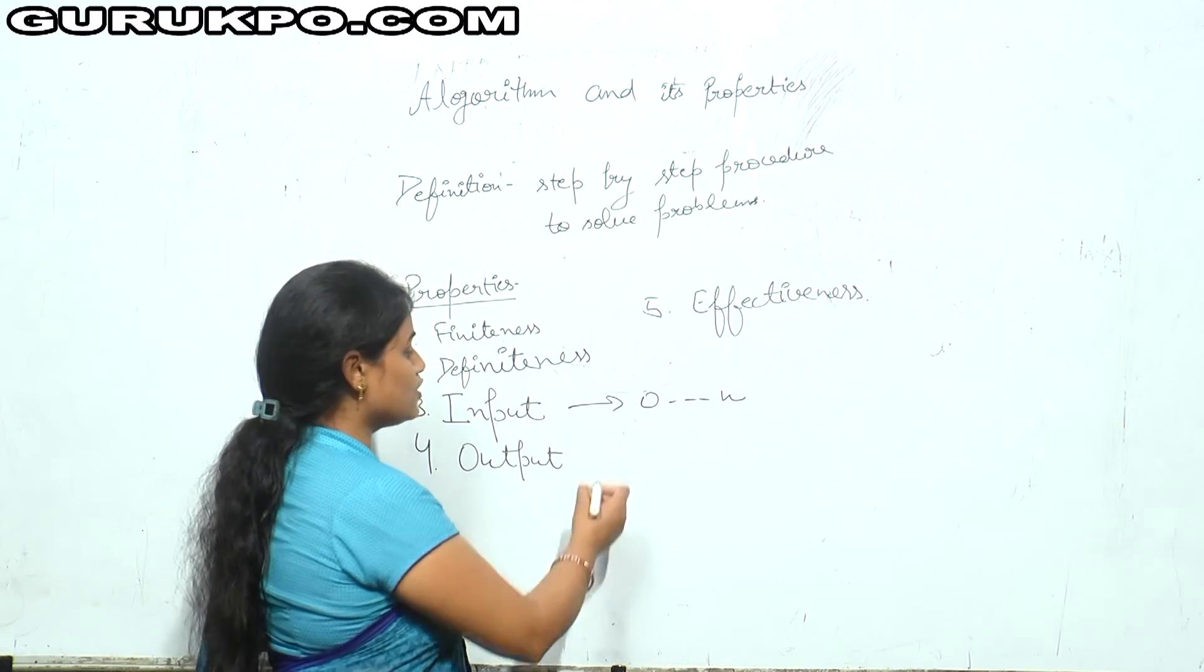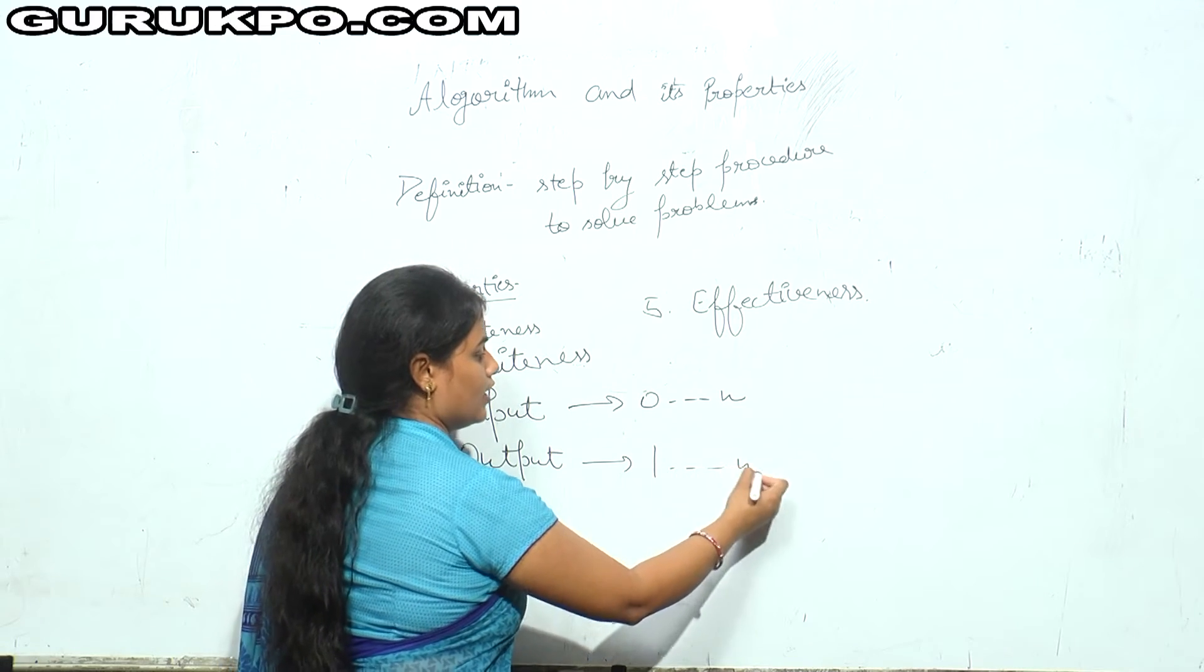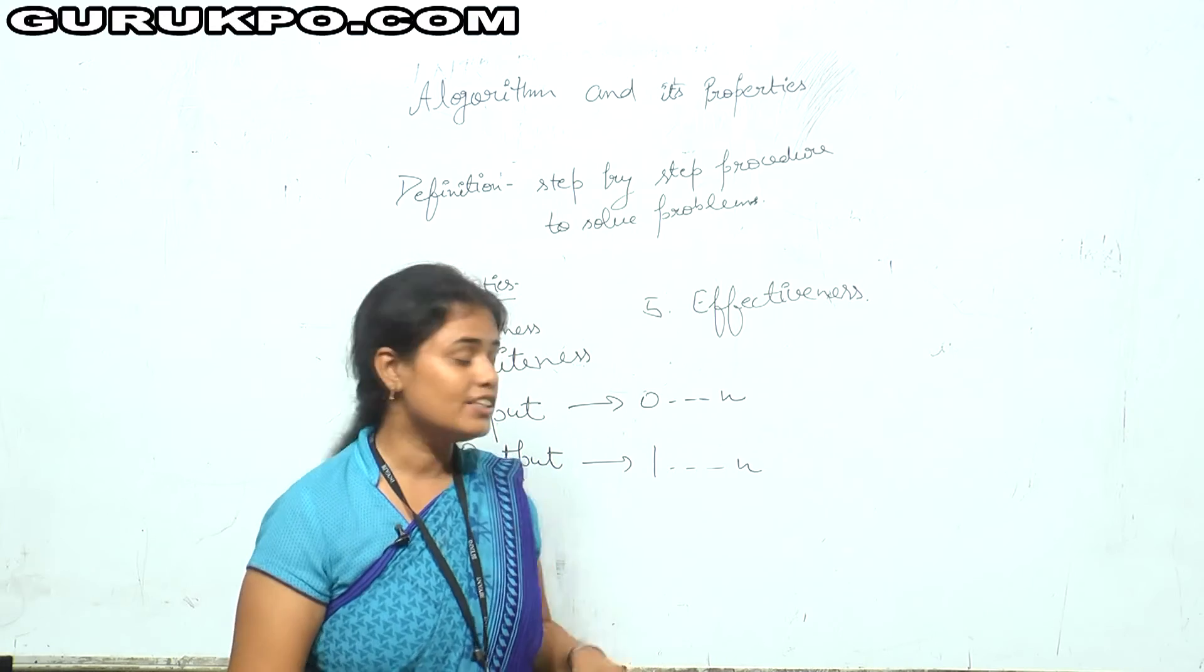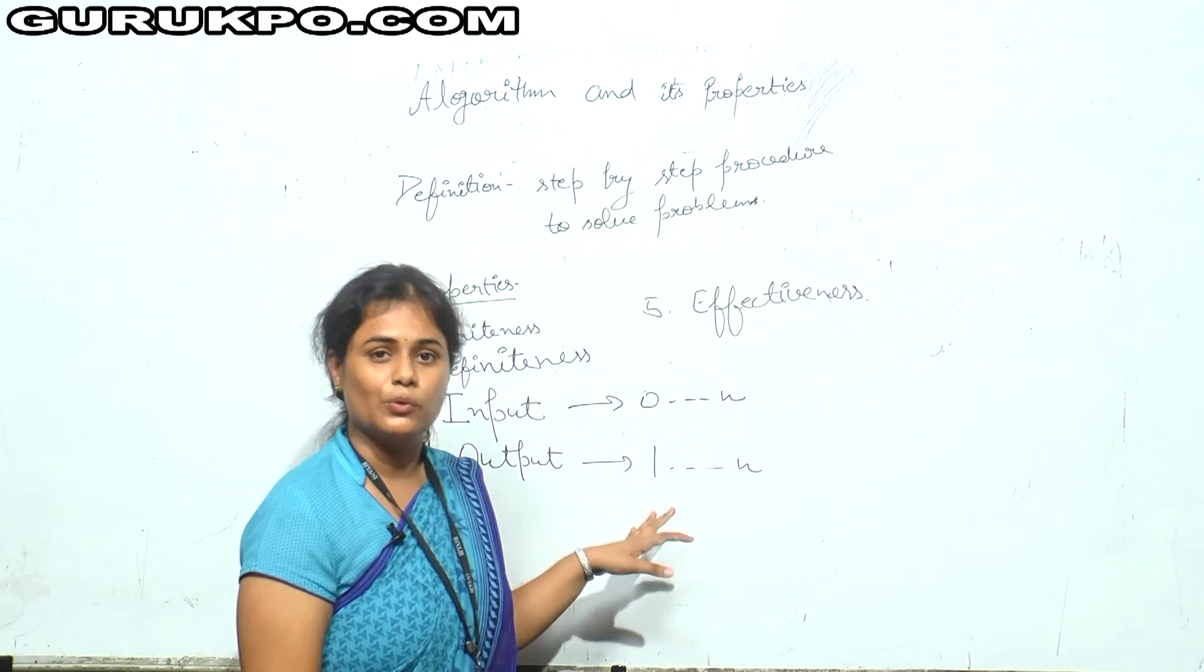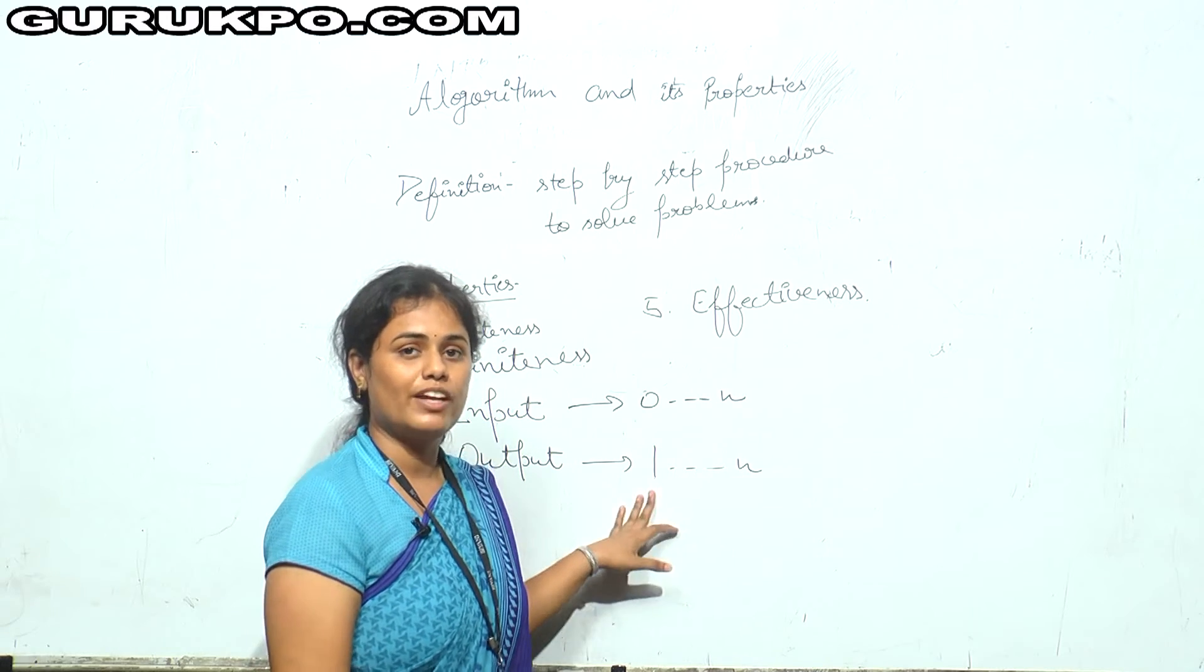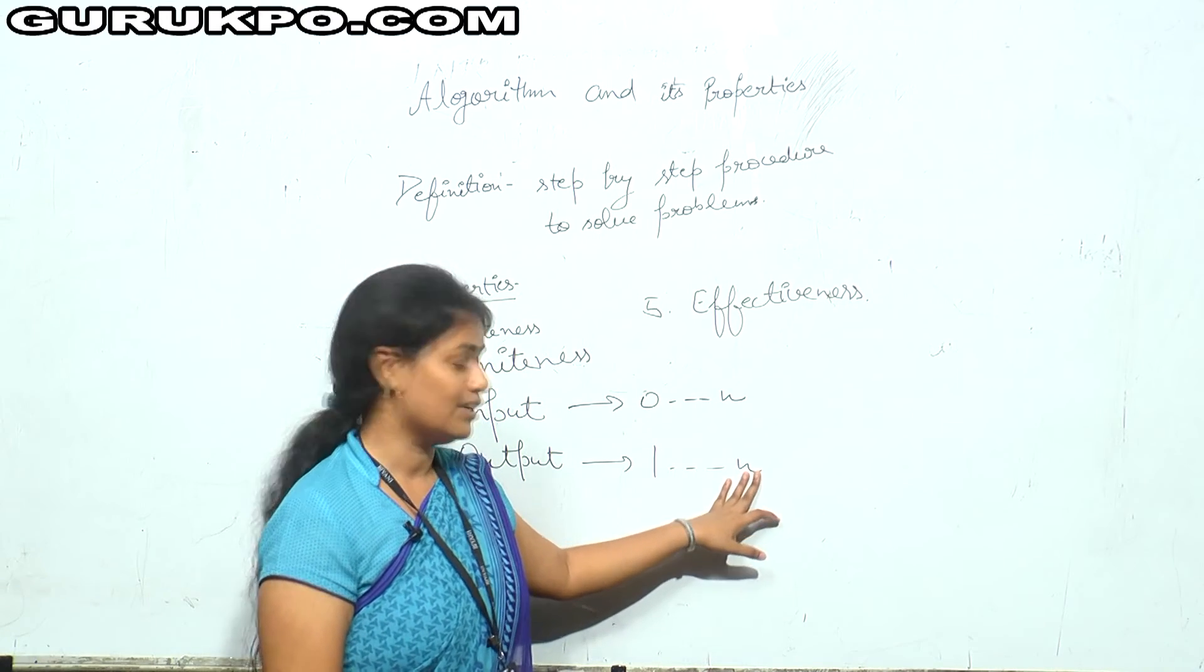But in case of output, output can be 1 to N. If there is an algorithm, then there will be an output. It is not possible that output is 0. Output will generate, that may be 1 to N. Output may be 1 and according to algo, it can be N.